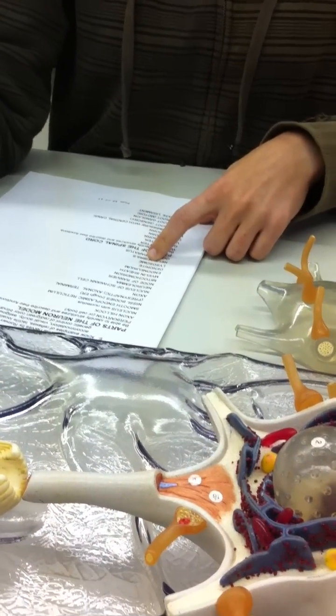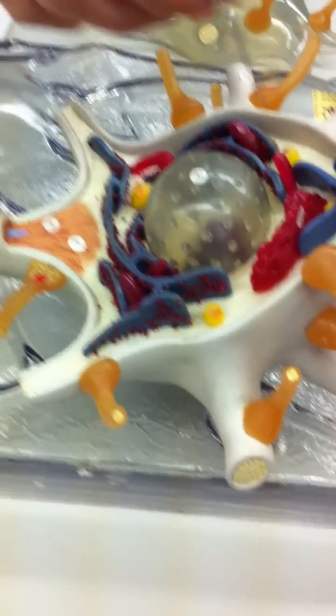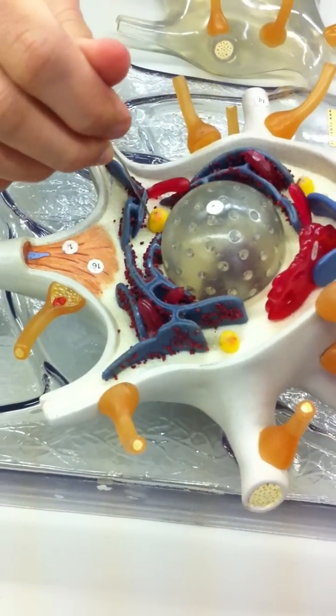Dendrite, oh, I just said dendrite. Lysosomes are these yellow bowl looking things.